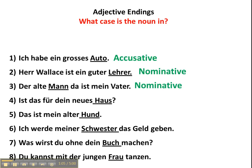Der alte Mann, da ist mein Vater. Nominativ — nominative — because it's the subject of a sentence. Ist das für dein neues Haus? This is going to be accusative, because it comes after the preposition für, which is always accusative in German.